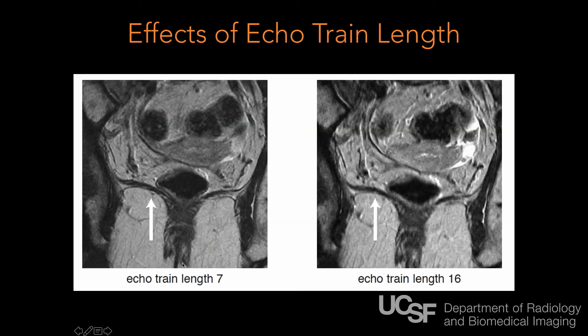Here's an example: a coronal view through the pelvis showing the levator ani muscles. With an echo train length of 7 versus 16 echoes per excitation, you can see the image gets considerably blurrier at 16 versus 7. If your images are too blurry for what you need clinically, echo train length is one of the parameters that you and your technologists working together have the ability to change.